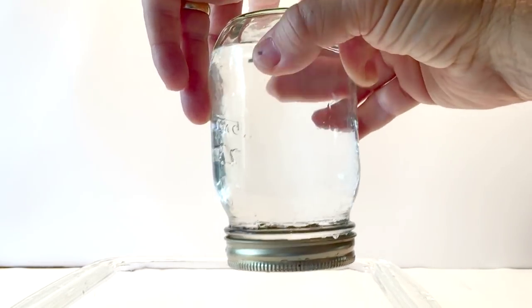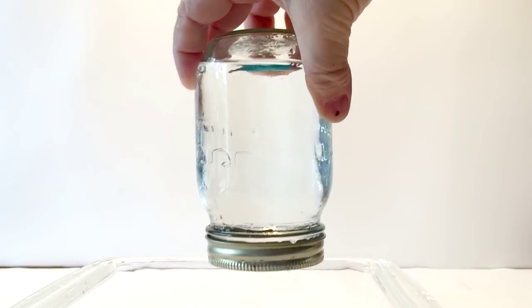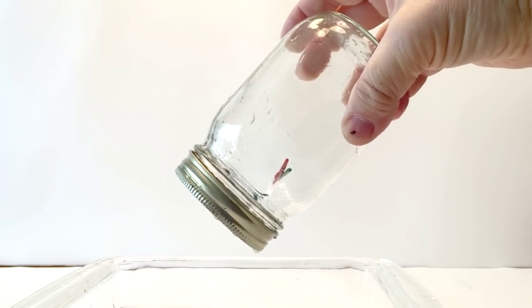Now when we take the jar and we angle it just to the side, you're going to see that it's going to empty out because we broke the surface tension, just like that, and all the water pours out. So there is no trick photography.